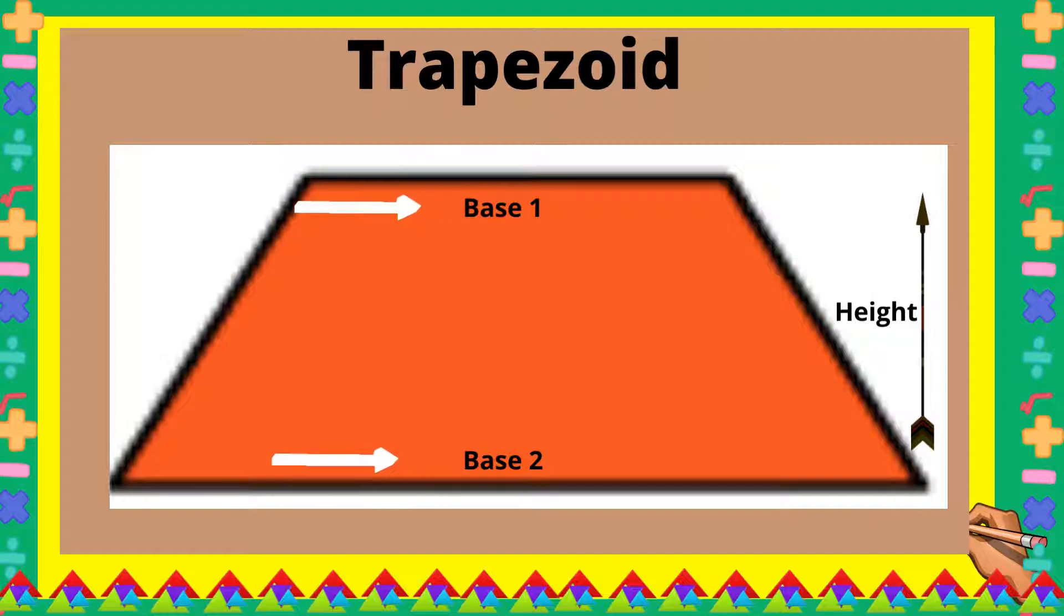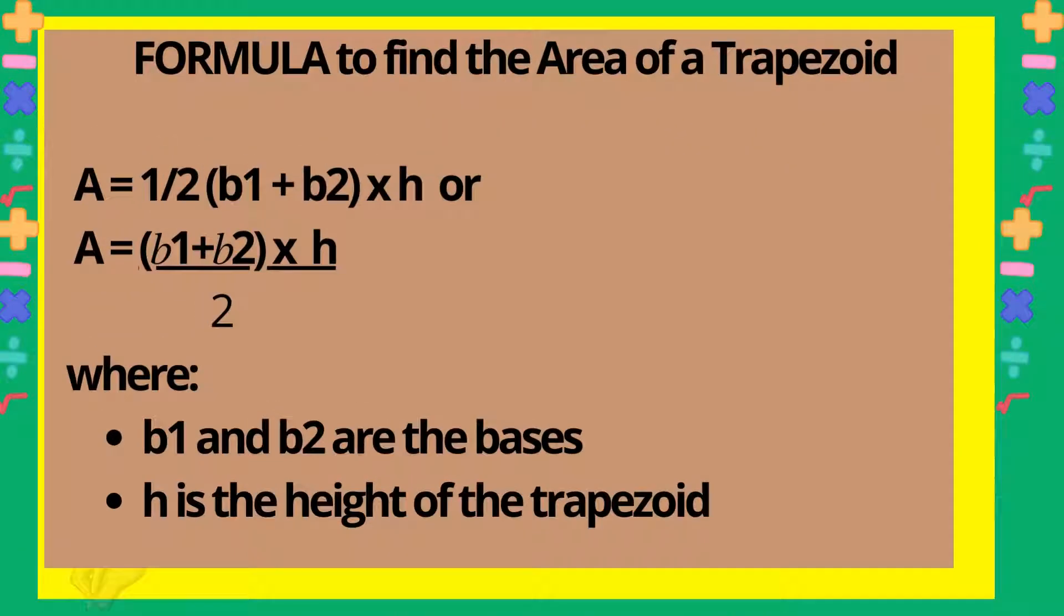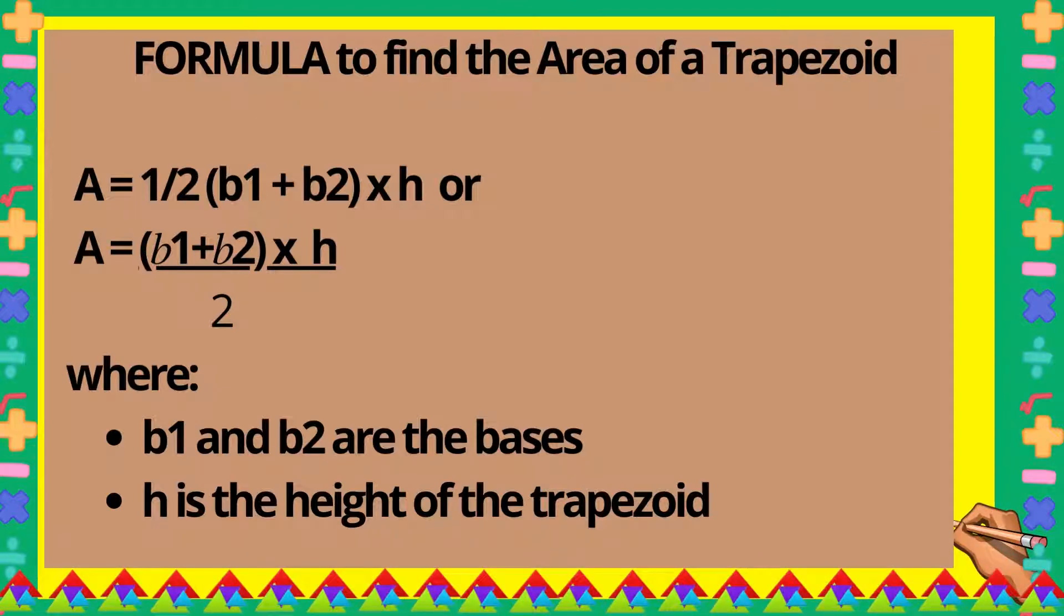And base 2, which is also a parallel line, and its height. So what is the formula to find the area of a trapezoid? You can use the formula: area is equal to half base 1 plus base 2 multiplied by height.